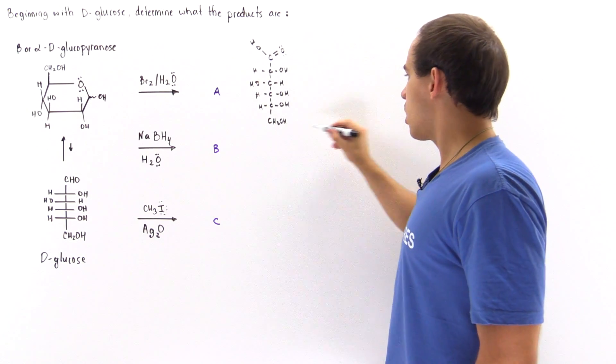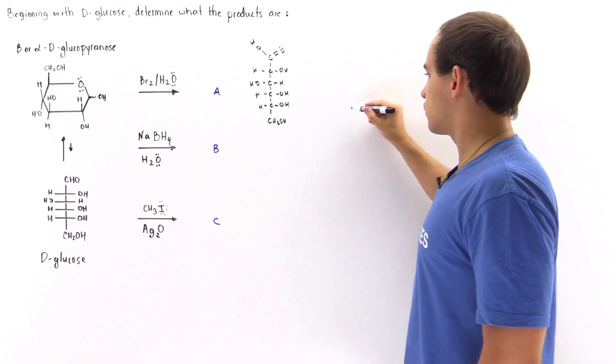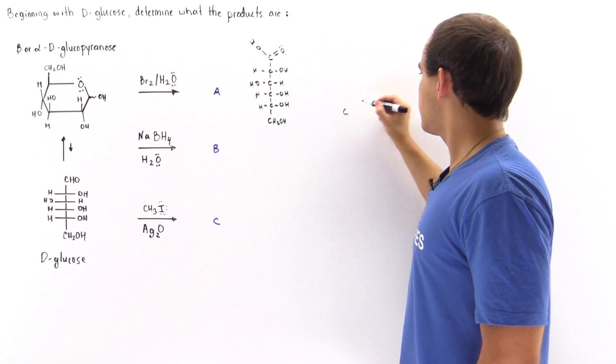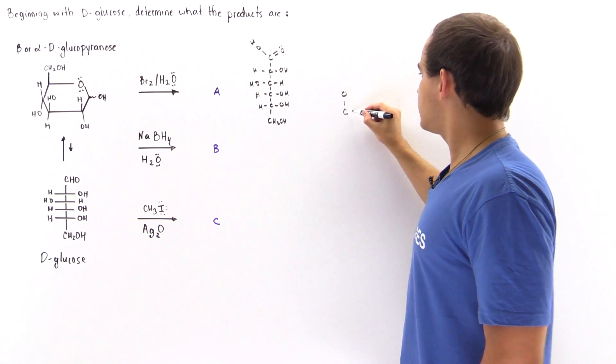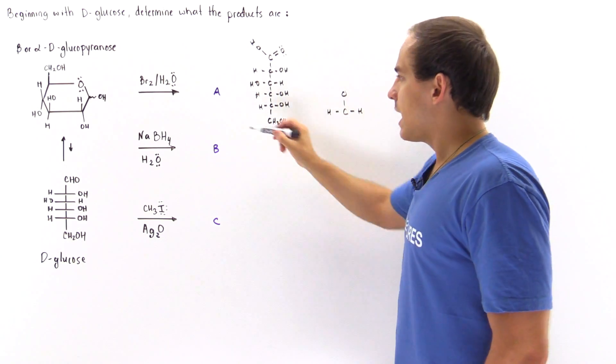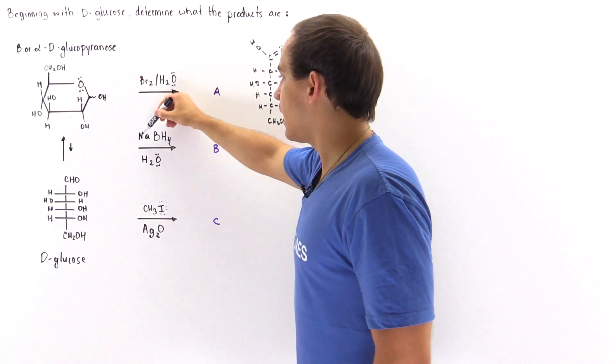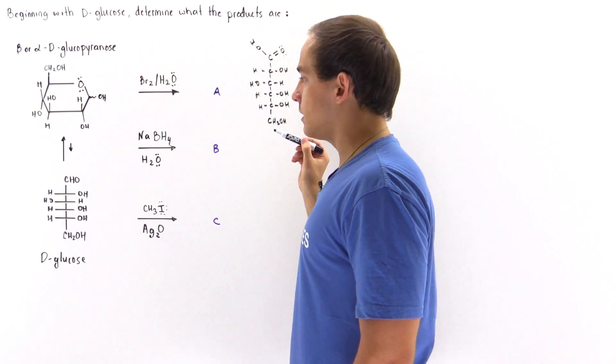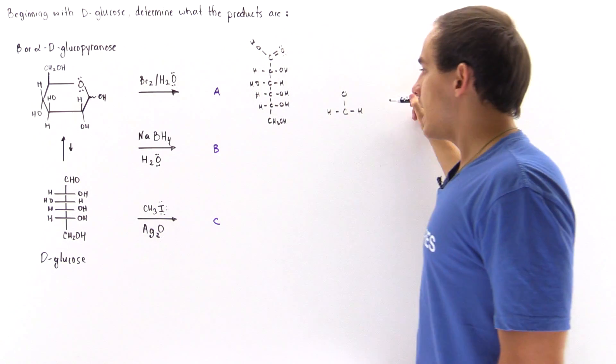Let's draw product B right over here. We have our first carbon, which is transformed into the following molecule. Our BH4 basically adds the H atom onto this carbon, and then the water molecule protonates this oxygen, so we form this alcohol group.